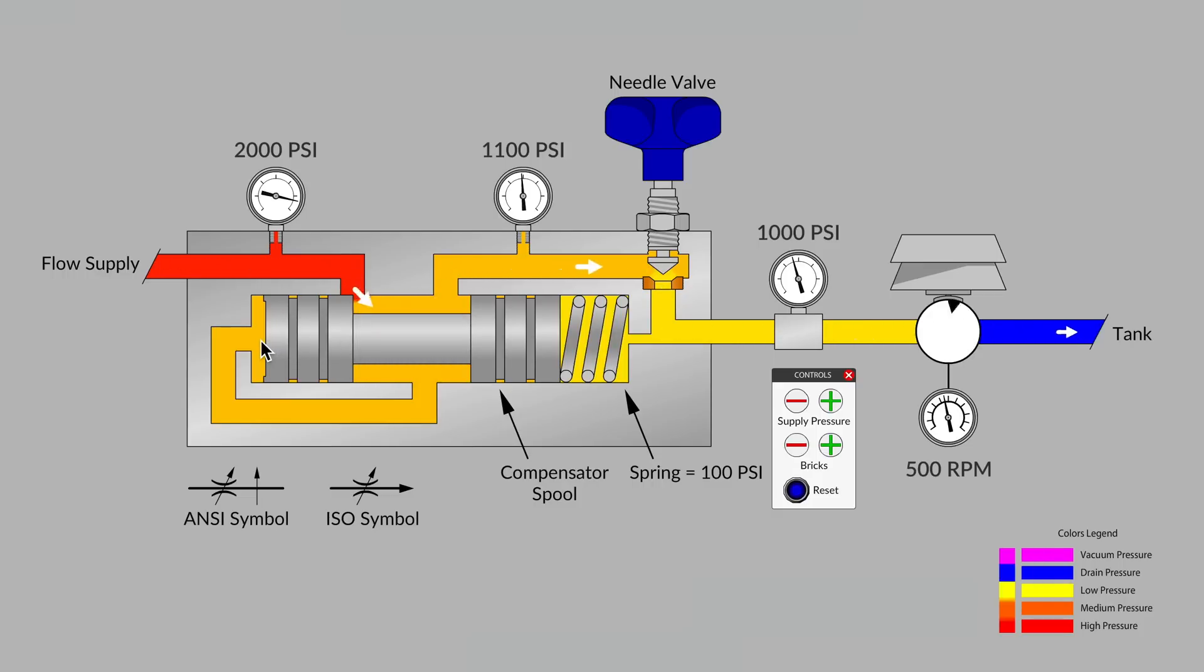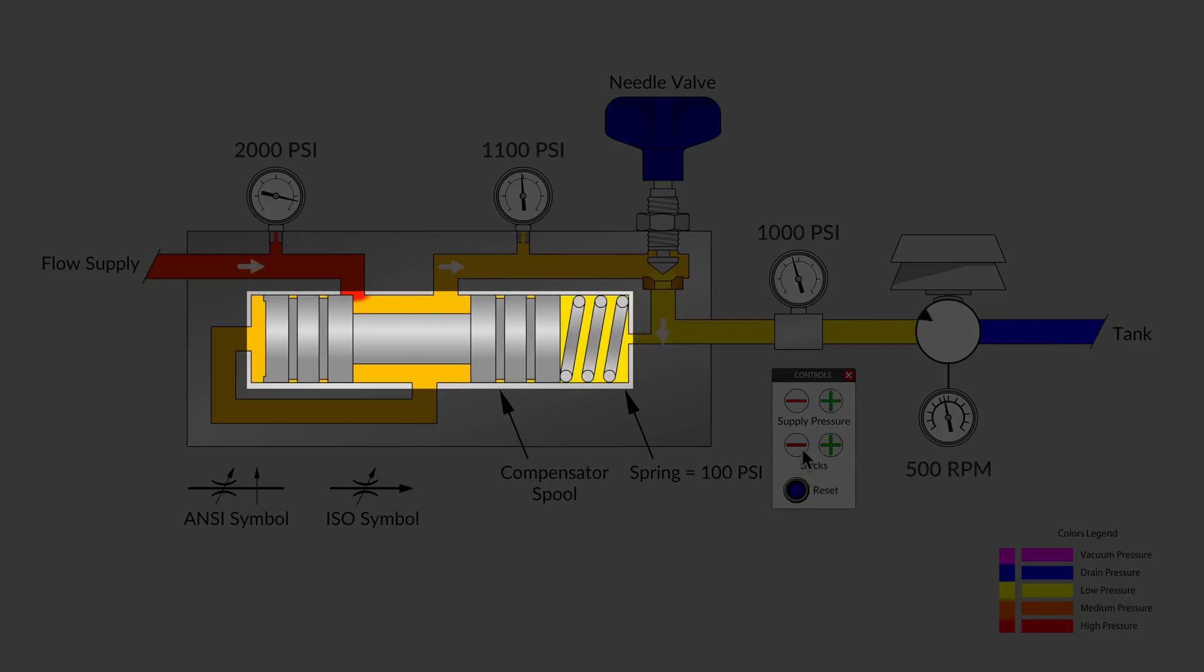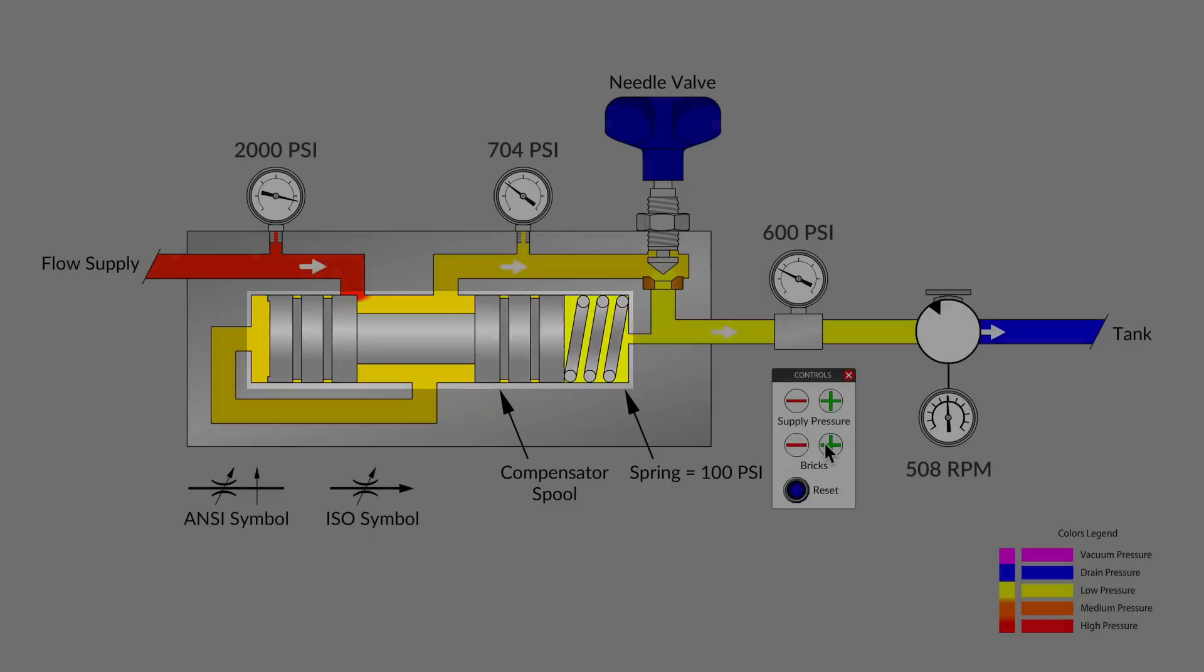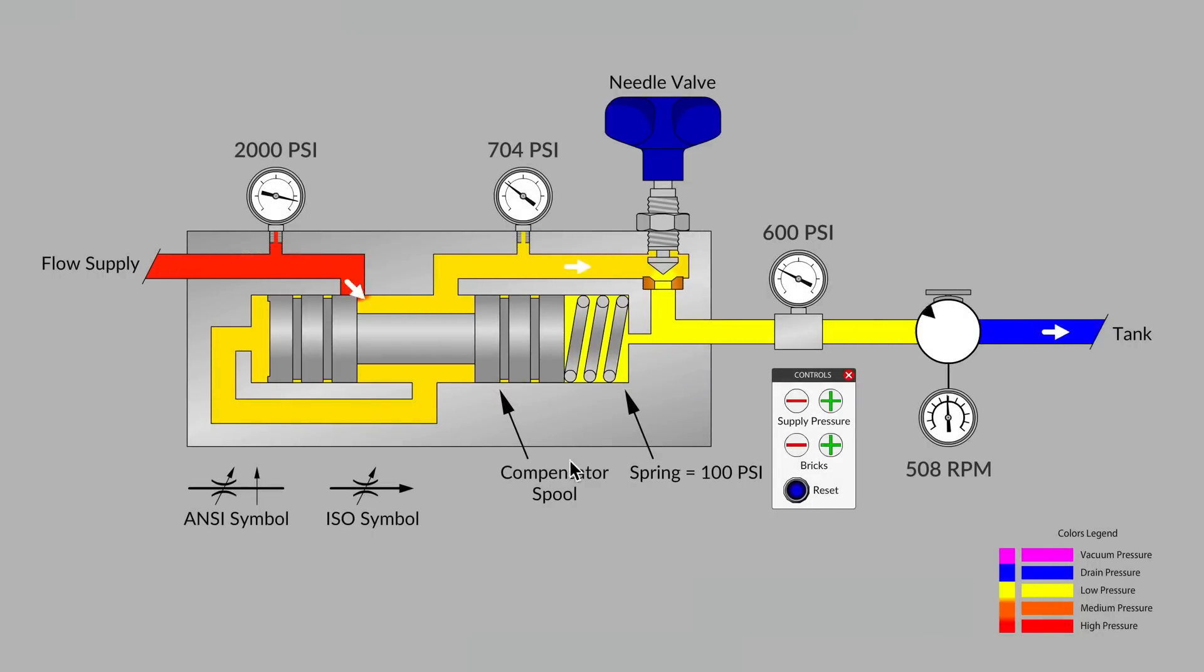Up until now, we've been talking about what happens if we increase pressure on the right, which moves our spool to the left. But if we reduce bricks on the brick stacker, then we notice our spool moves to the right. That's thanks to pressure that is acting on the left side piston face of our pressure compensator spool.